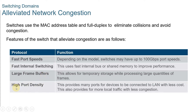The next characteristic is high port density. A high port-density switch lowers overall costs because it reduces the number of switches required. For instance, if 96 access ports were required, it would be less expensive to buy two 48-port switches instead of four 24-port switches. High port-density switches also help keep traffic local, which helps alleviate congestion, providing many ports for devices interconnected to the LAN with less cost and less congestion.